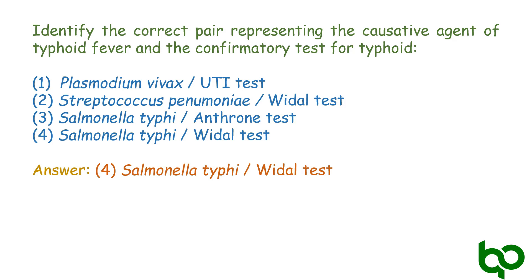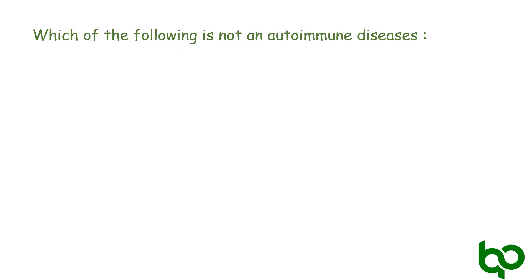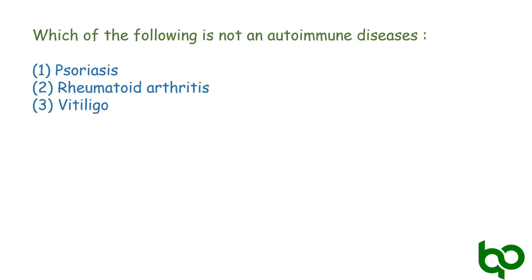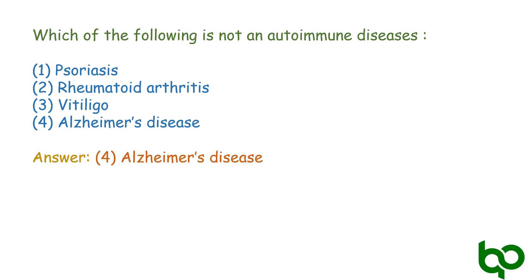Next question: which of the following is not an autoimmune disease? Options are: psoriasis, rheumatoid arthritis, vitiligo, and Alzheimer's disease. The answer is option 4 — Alzheimer's disease — because psoriasis, vitiligo, and rheumatoid arthritis are autoimmune diseases, where the body tissues are attacked by its own immune system. Alzheimer's disease is caused by brain cell death; it is a neurodegenerative disorder involving progressive brain cell death that happens over time. Thank you, stay tuned for our next video.